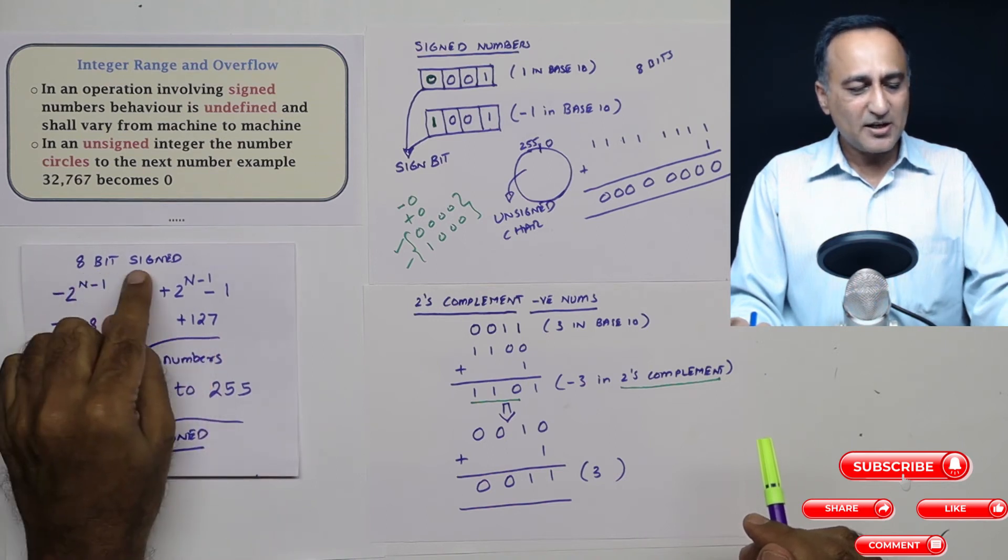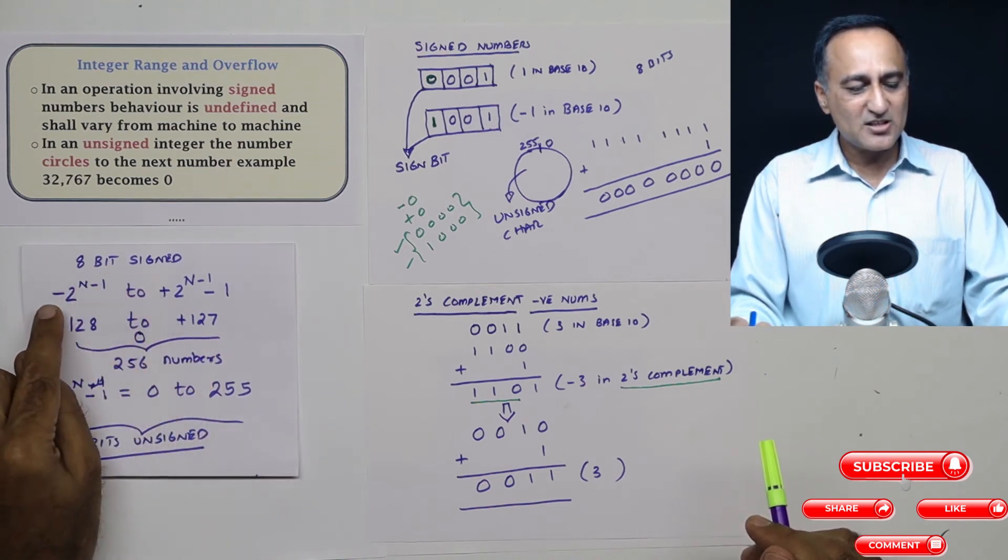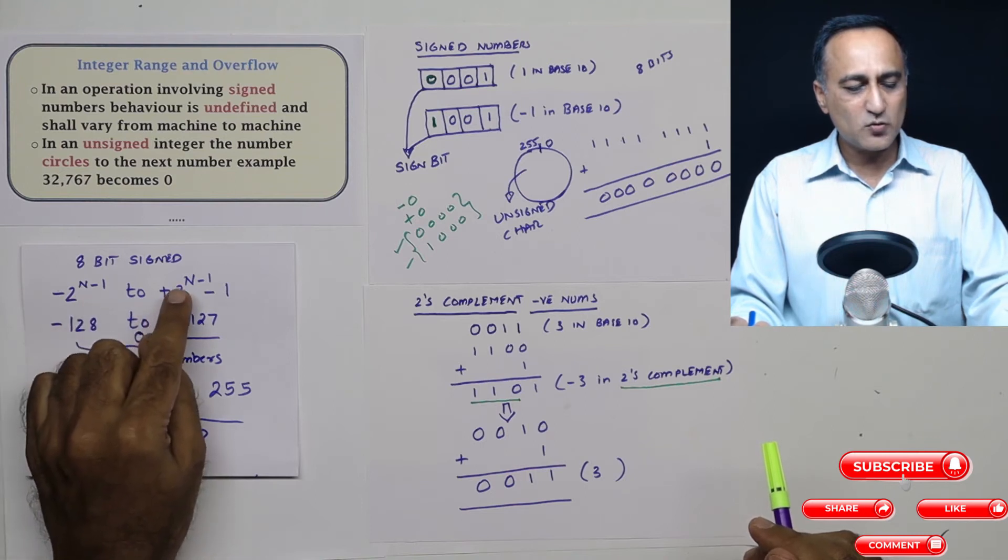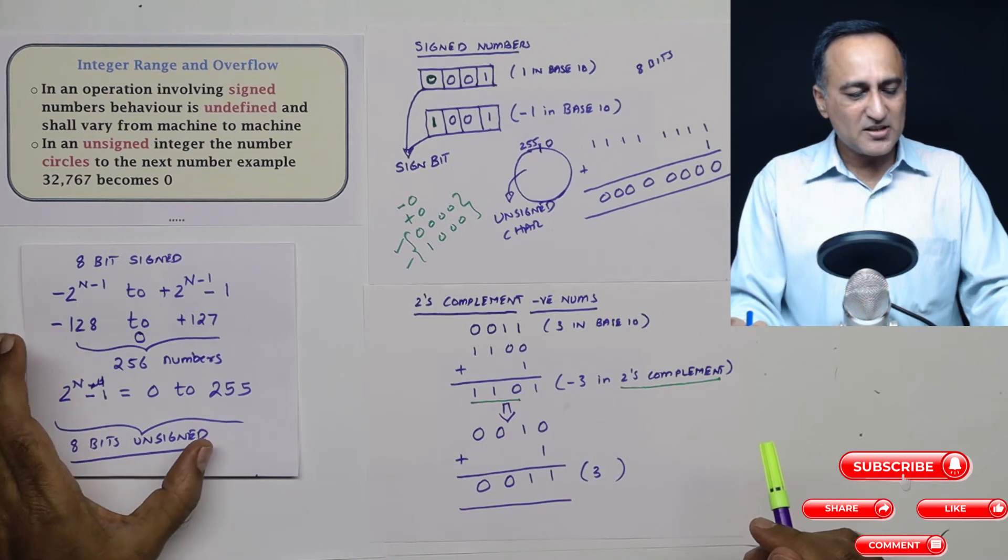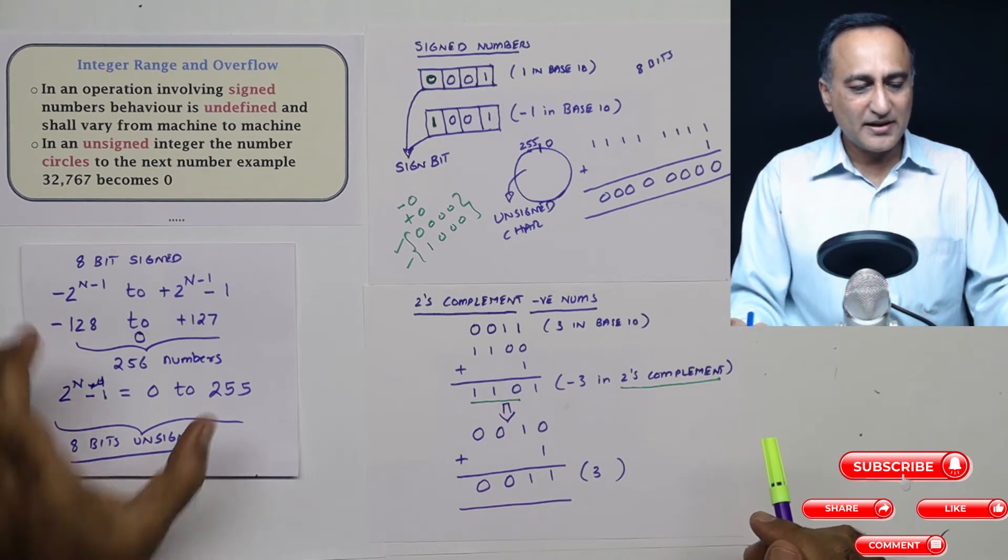For a signed eight bit to find its range, this is the formula: minus 2^(n-1) to plus 2^(n-1) minus one. Now this explains a lot about what a range of integer is.